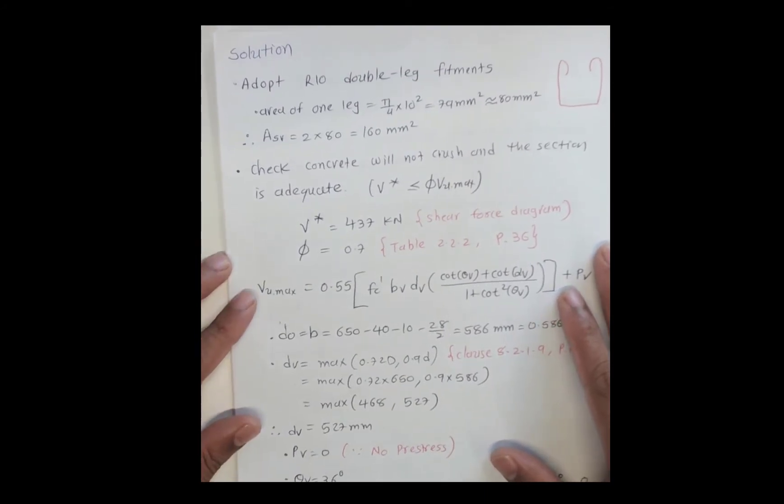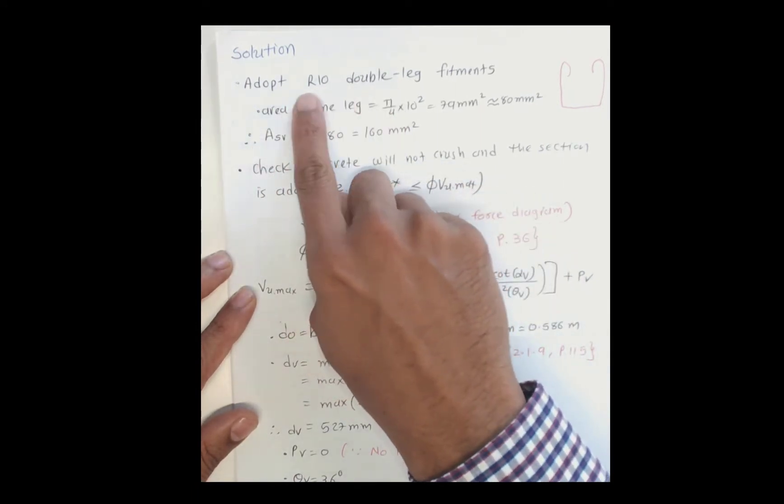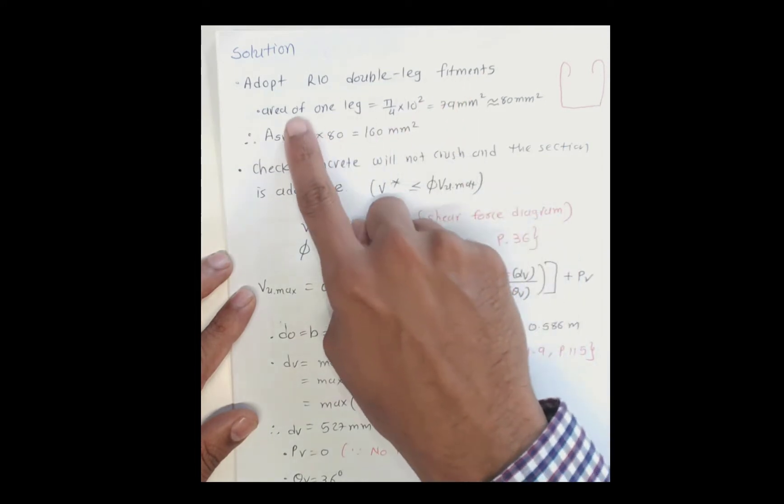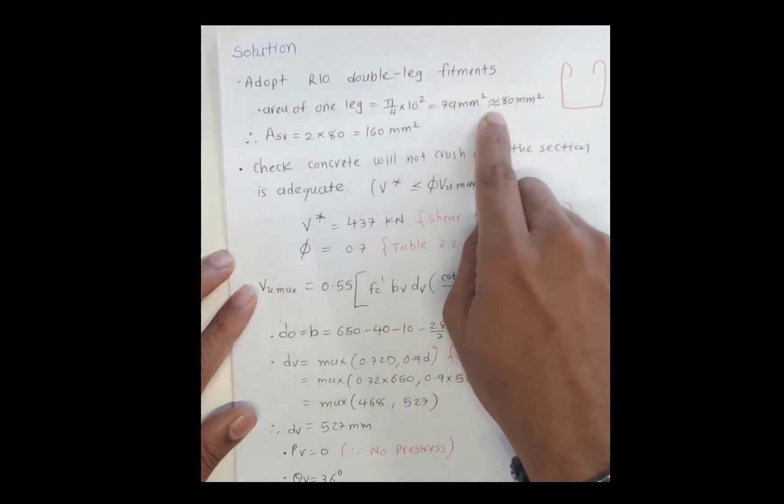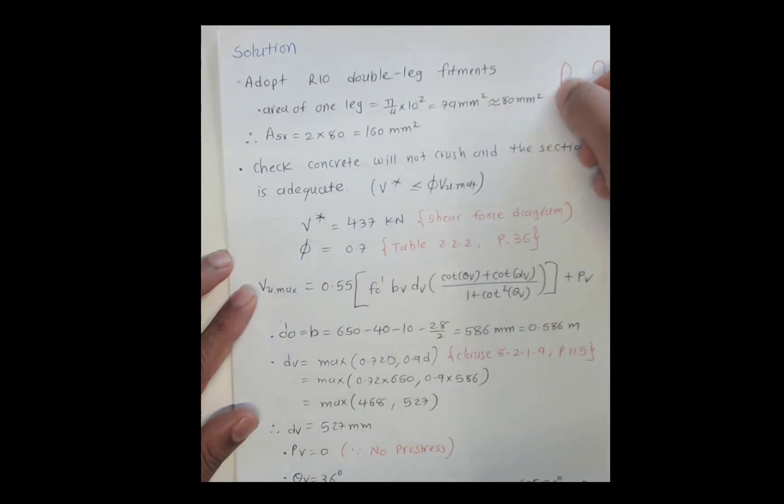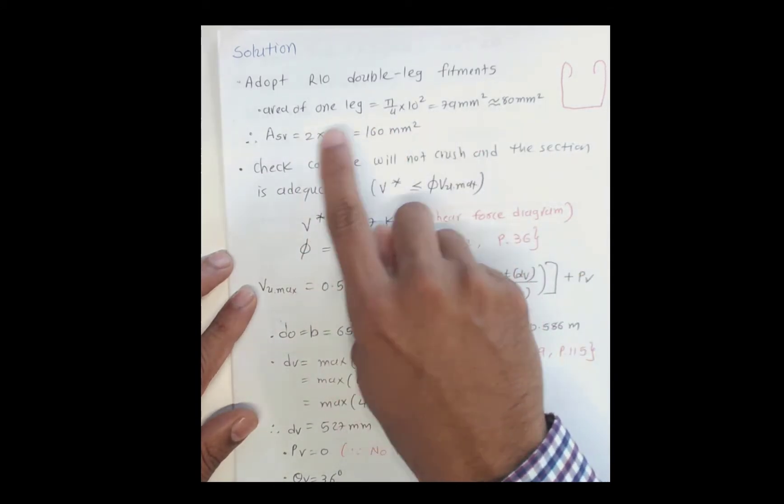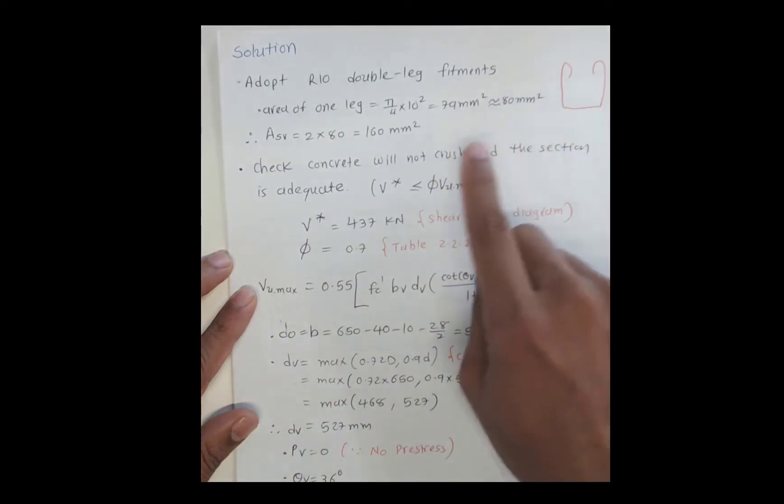To design for shear reinforcement, we generally start with assumptions. We take R10 stirrups, which are double-leg fitments. The area for one leg is π/4 times diameter squared. Diameter is 10, so 10 squared gives us 79mm², which we round to 80mm² for easier calculation. Since it has two legs, the area ASV equals 2 times 80, which is 160mm².